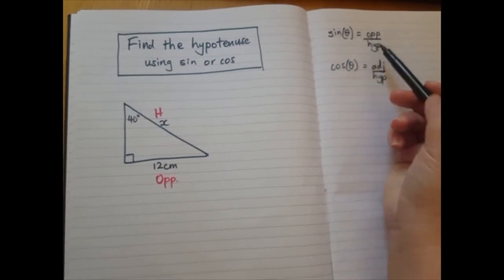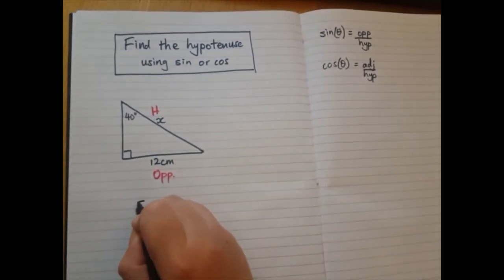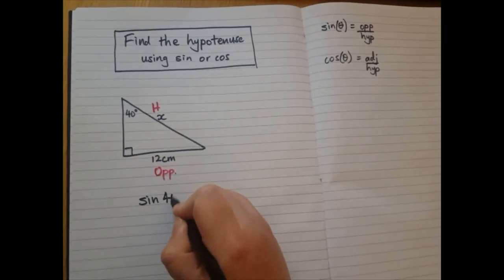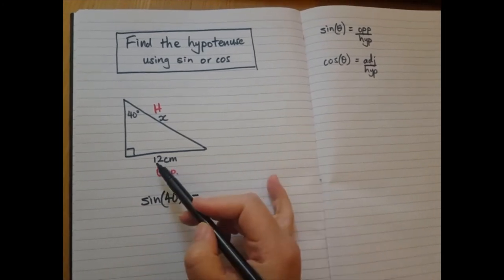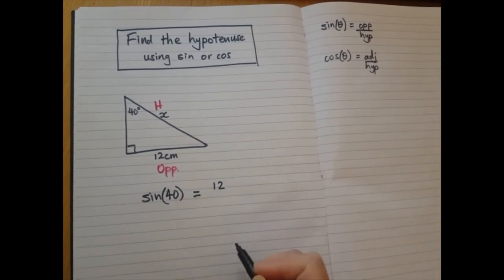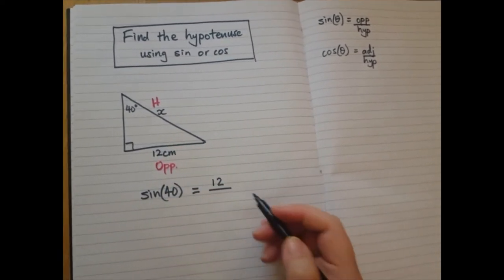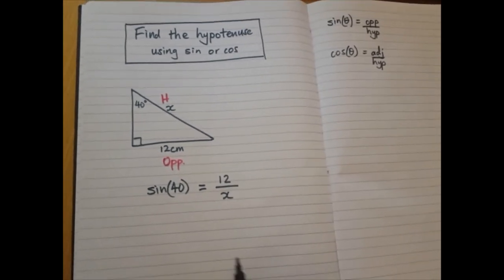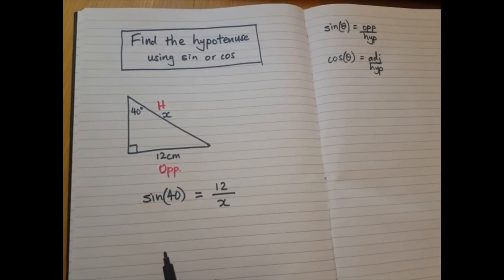Sin angle equals opposite over hypotenuse, and I'm going to put the numbers in. So the angle is 40. So sin 40 degrees equals. Now the opposite is 12, so that goes on the top of the fraction. The hypotenuse is x. That goes on the bottom of the fraction. So this is where we need to do an extra step before we can solve it.